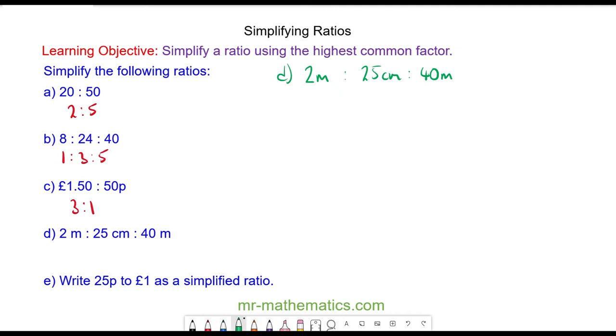To simplify this ratio, we need to write all three numbers with the same units, and I'm going to choose centimeters. To convert 2 meters to centimeters, we need to multiply it by 100 because there are 100 centimeters in a meter, so this is 200. We've been given 25 centimeters, and the 40 meters to convert to centimeters. Again, we multiply it by 100, and we get 4000.